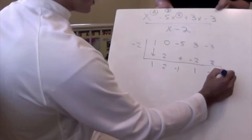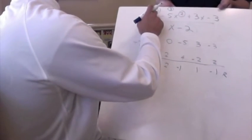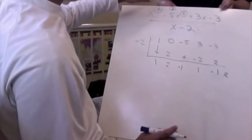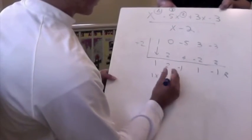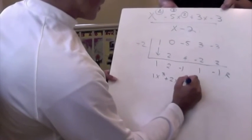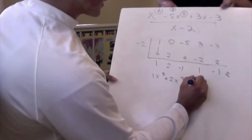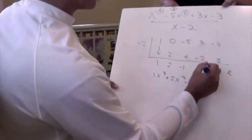This is going to be our remainder. So since 4 is our highest power, we're going to start at 3. So we're going to have 1x cubed plus 2x squared minus 1x, being our constant, plus 1.